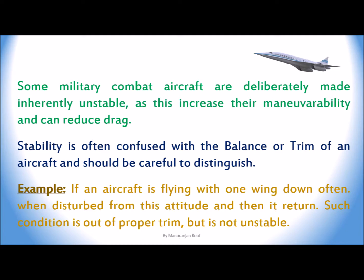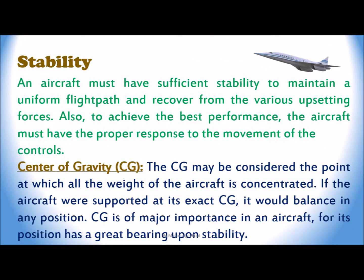Stability is often confused with the balance or trim of an aircraft and one should be careful to distinguish between them. For example, if an aircraft is flying with one wing down and when disturbed from this attitude it returns to that condition, it is out of proper trim but is not unstable. An aircraft must have sufficient stability to maintain a uniform flight path and recover from various upsetting forces, and must have proper response to the movement of the controls.